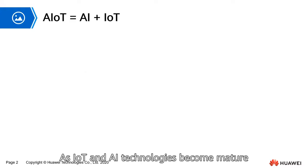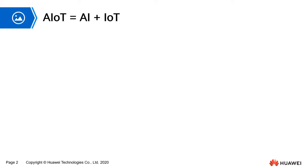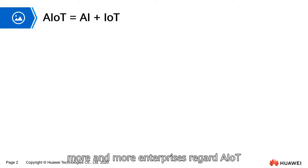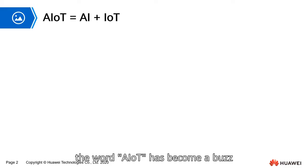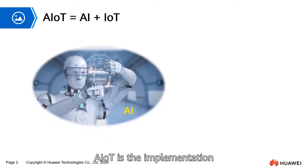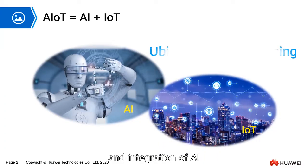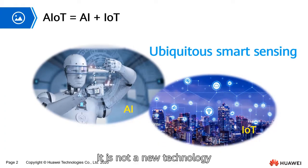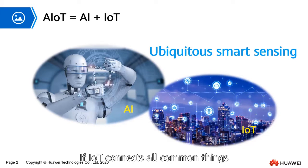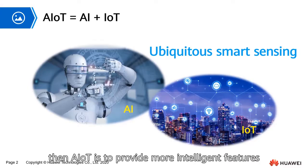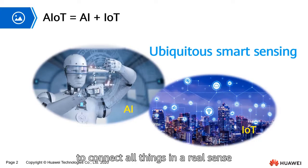As IoT and AI technologies become mature, more and more enterprises regard AIoT as their main development direction. Since 2017, the word AIoT has become a buzz in the IoT industry. AIoT is the implementation and integration of AI and IoT in real-life applications. It is not a new technology, but a new application form of IoT. If IoT connects all common things that function independently through networks, then AIoT is to provide more intelligent features to connect all things in a real sense.